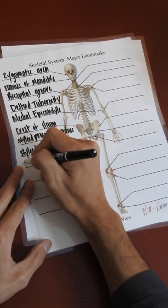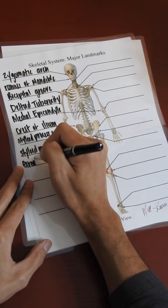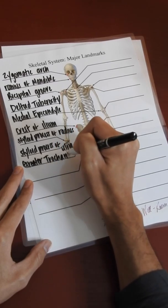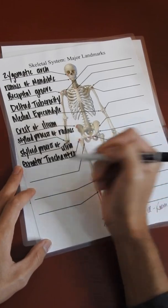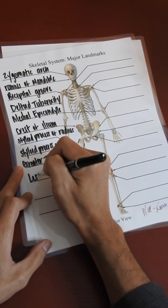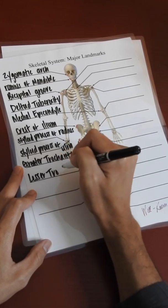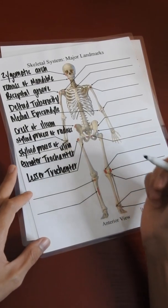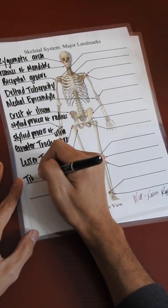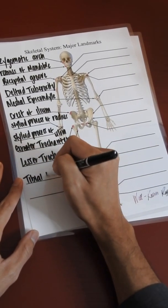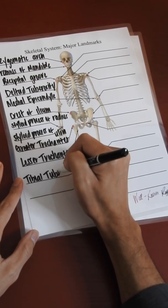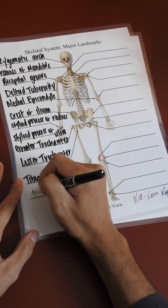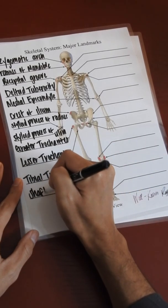The greater trochanter, the lesser trochanter, the tibial tuberosity, and the shaft of the tibia, also known as the shin bone.